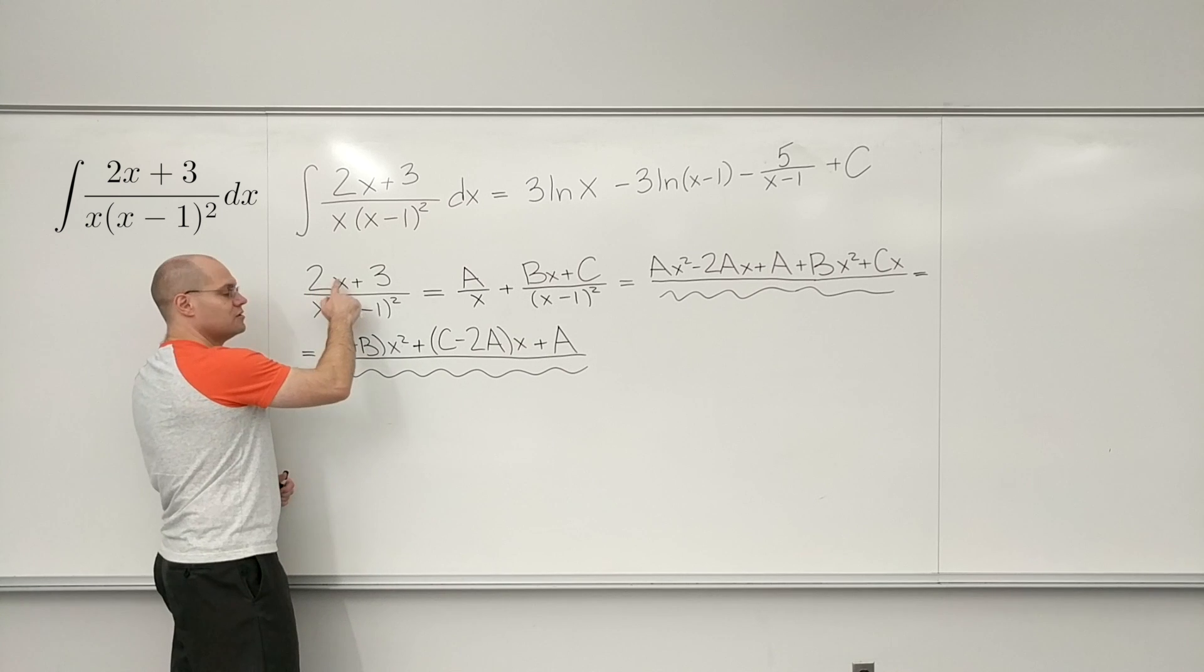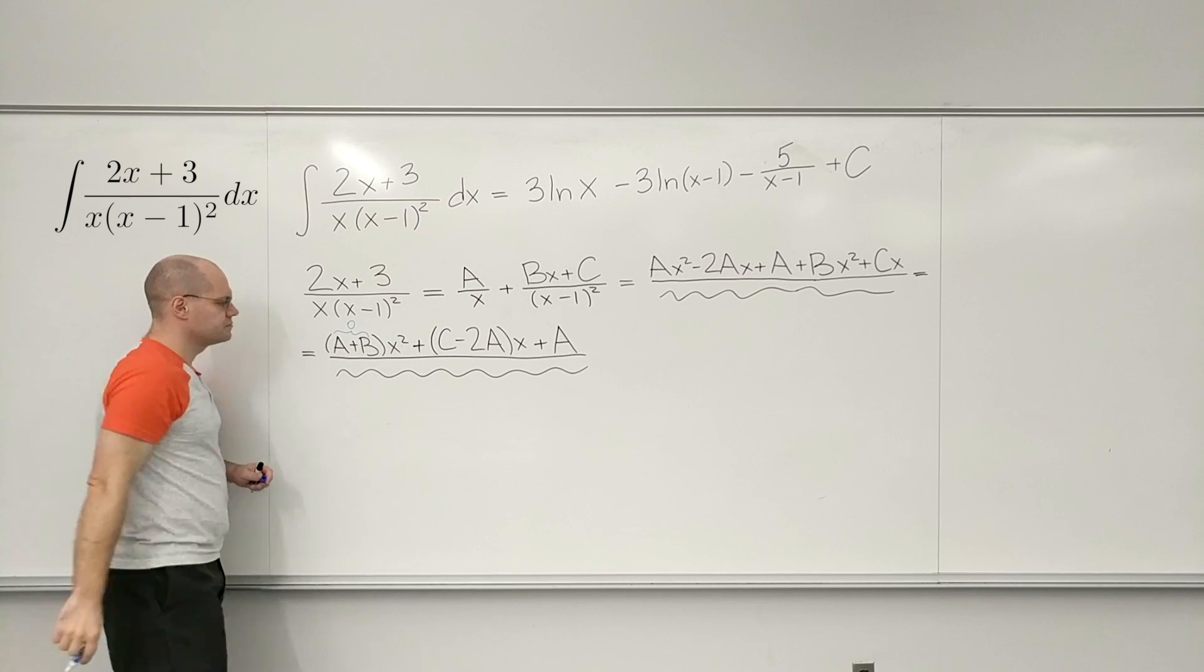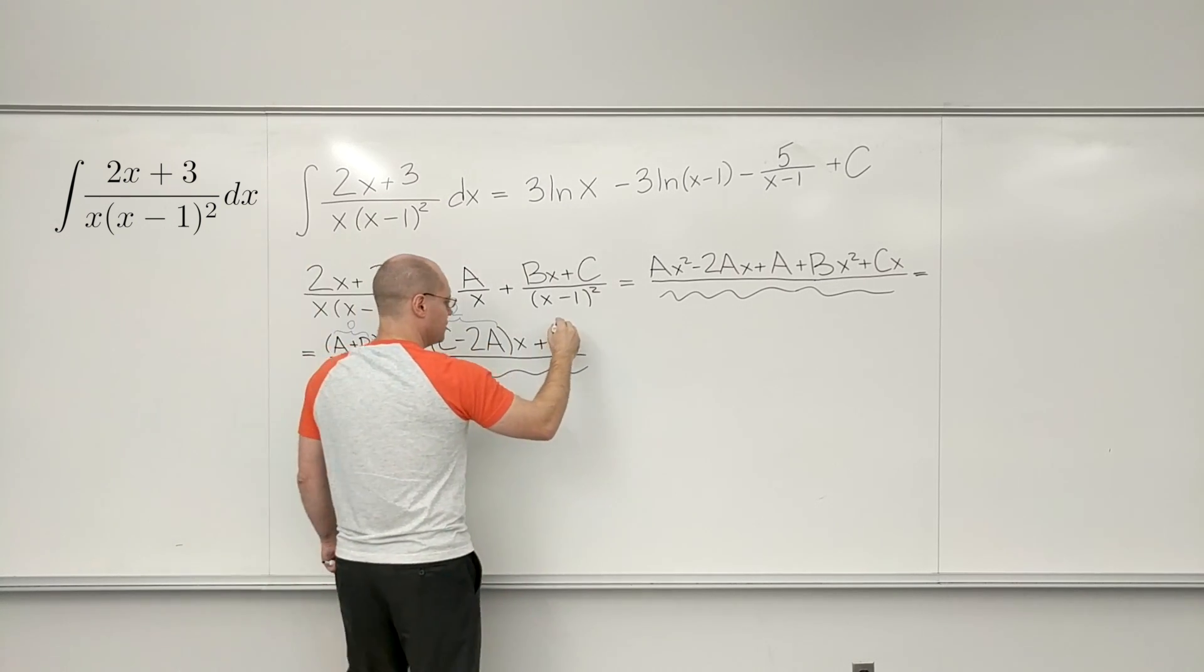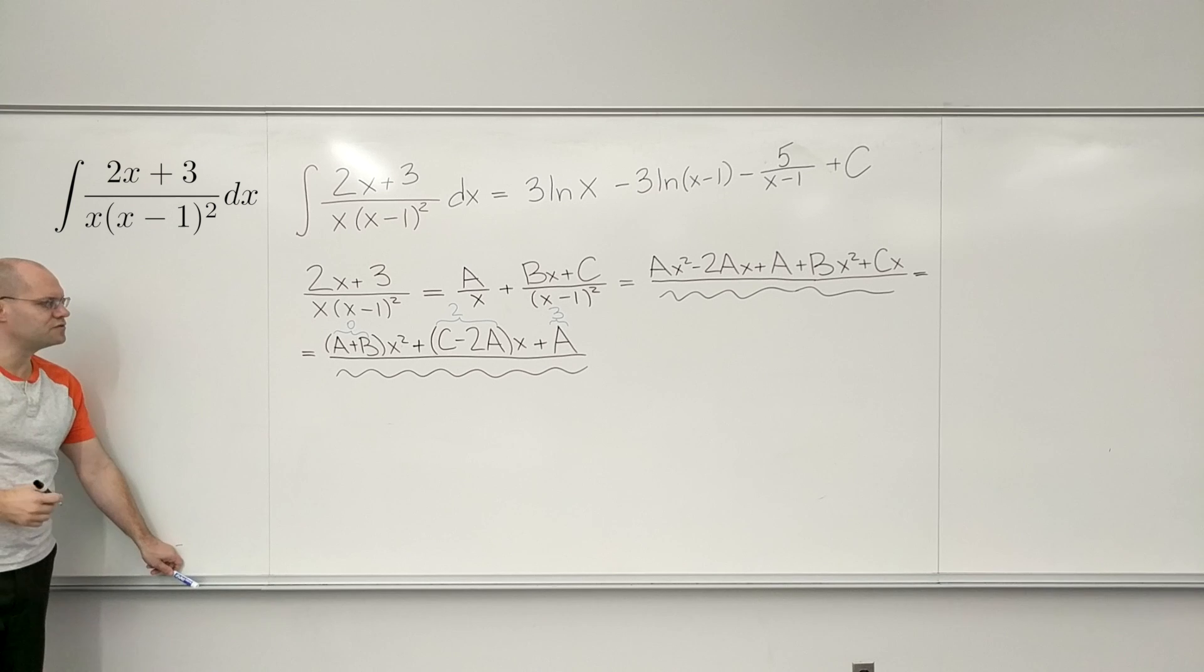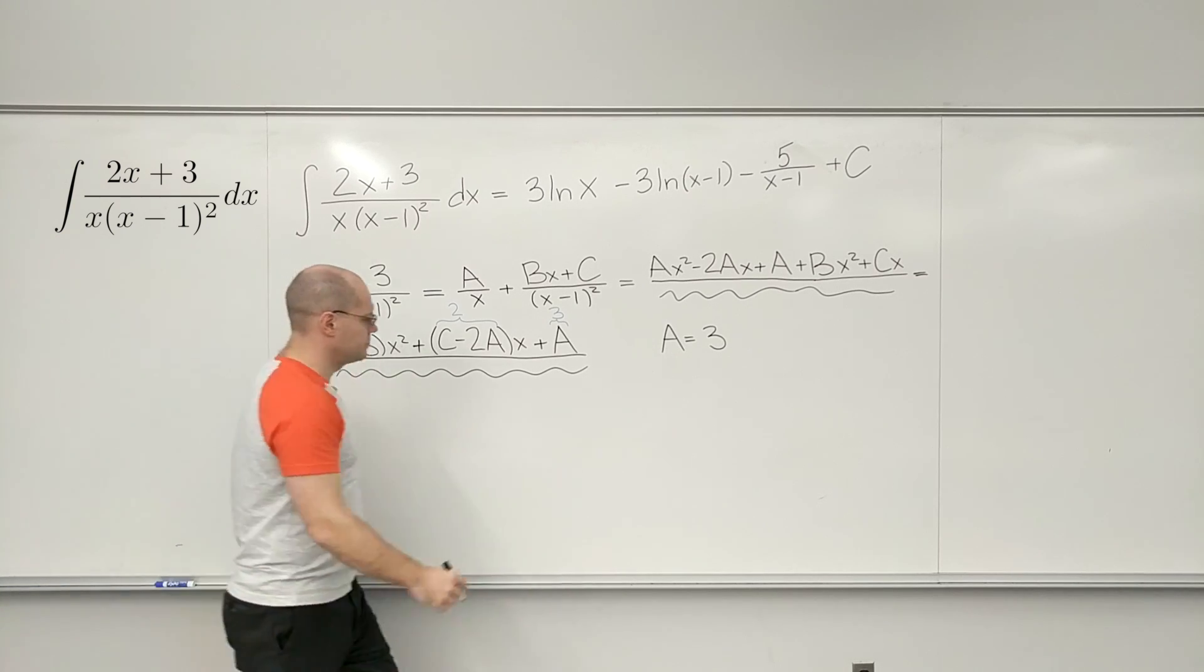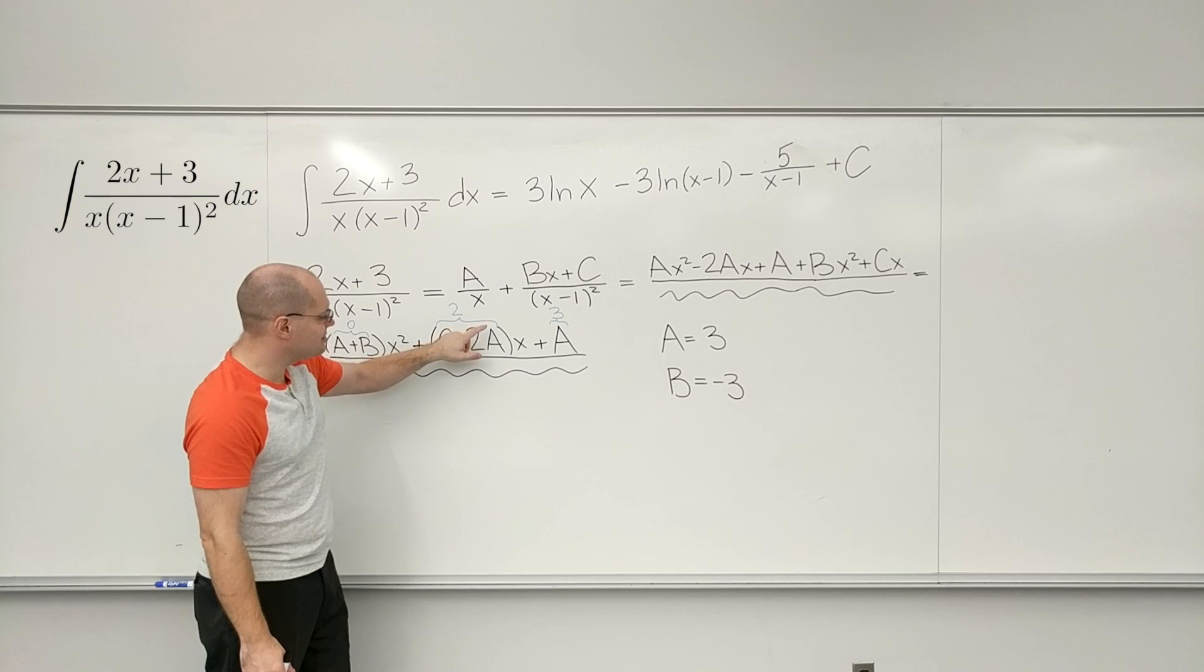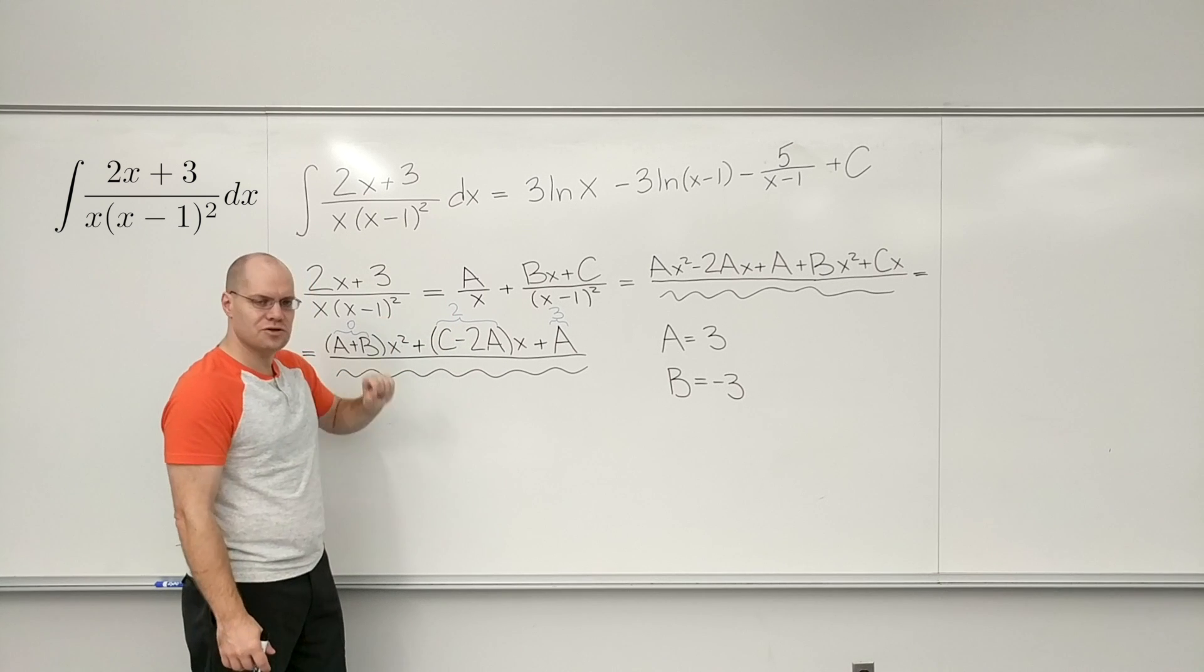So once again, we need to match up this numerator with 2x plus 3. So once again, A plus B is 0. Okay, C minus 2A is 2. So you guys see? A little bit different. 2. And A is 3. I like blue more than green. So I'm going to stick to using blue for now. Alright. So once again, A equals 3. B equals minus 3. And C equals? Okay, so C minus 6 equals 2. C minus 6 equals 2. So C is 8.